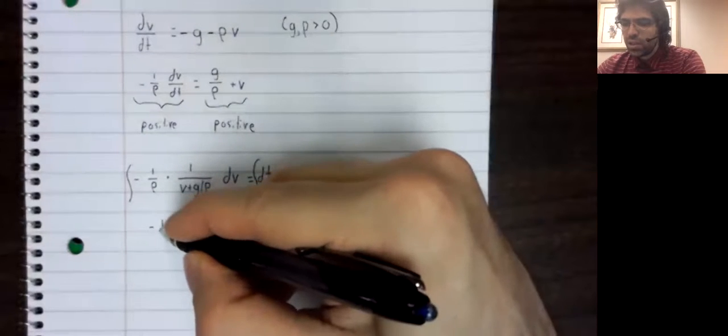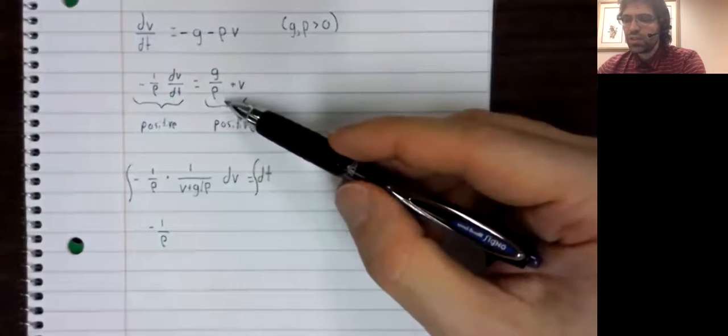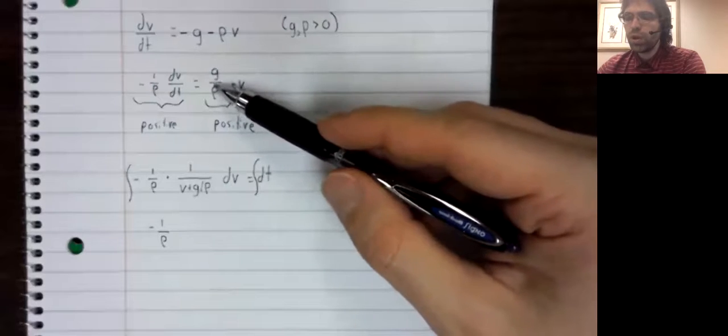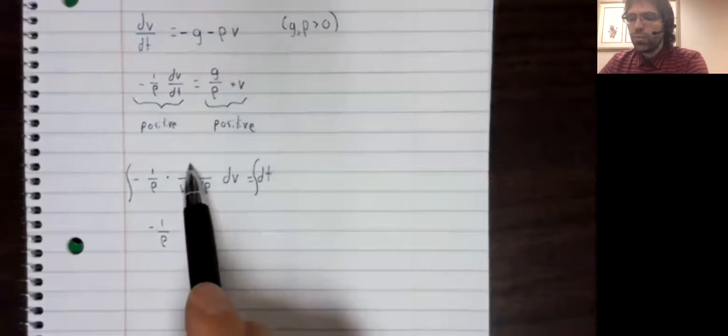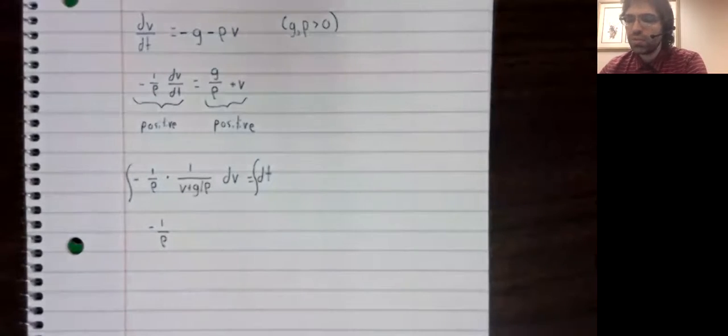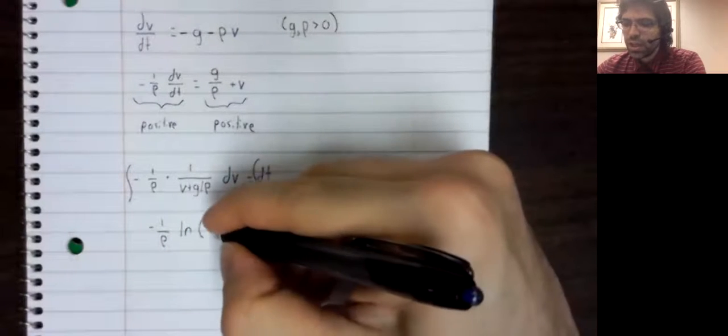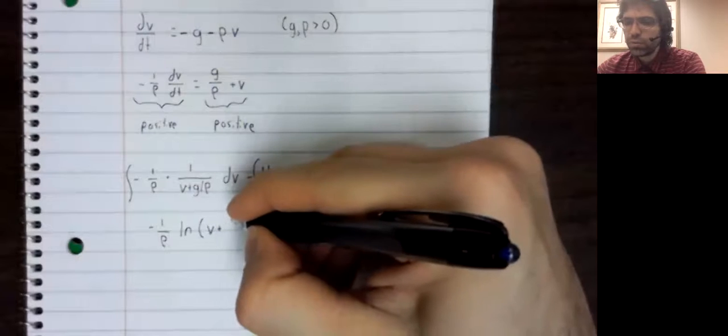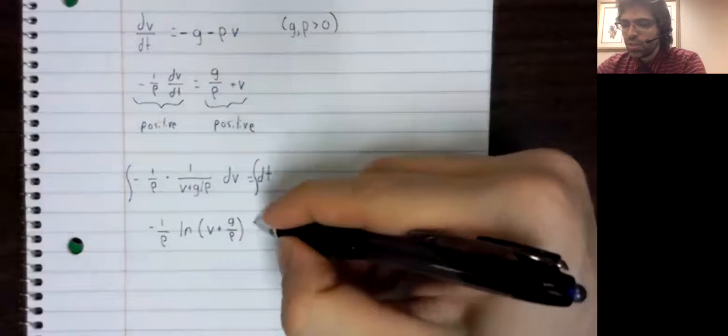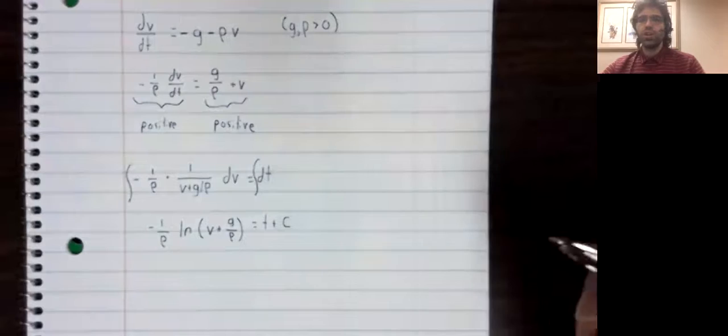And here's where this observation is going to be useful. So if v plus g over rho is positive, one divided by a positive number is positive. Ordinarily, you'd have absolute value symbols in this natural logarithm. But since everything is positive, there's no need.